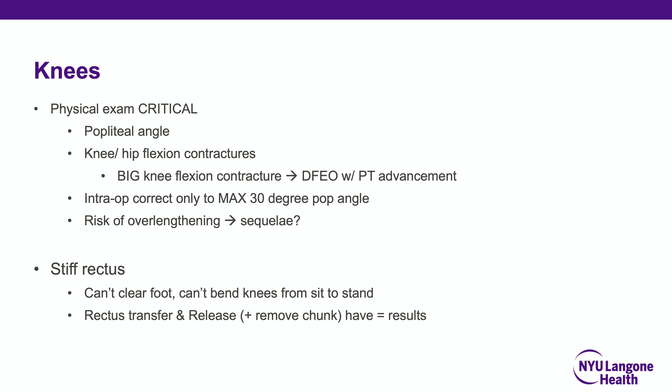For knees, physical exam is critical. Popliteal angle and assessment of knee and hip flexion contractures are important. If there is a large knee flexion contracture, lengthening the hamstrings alone is insufficient since you can only lengthen to the extent of the contracture. Those children require a distal femoral extension osteotomy with patellar tendon advancement. Intraoperative correction should only go to a maximum of about 30 degrees popliteal angle — anything more can lead to significant back-kneeing, and there is no surgical or bracing bailout for over-lengthening.